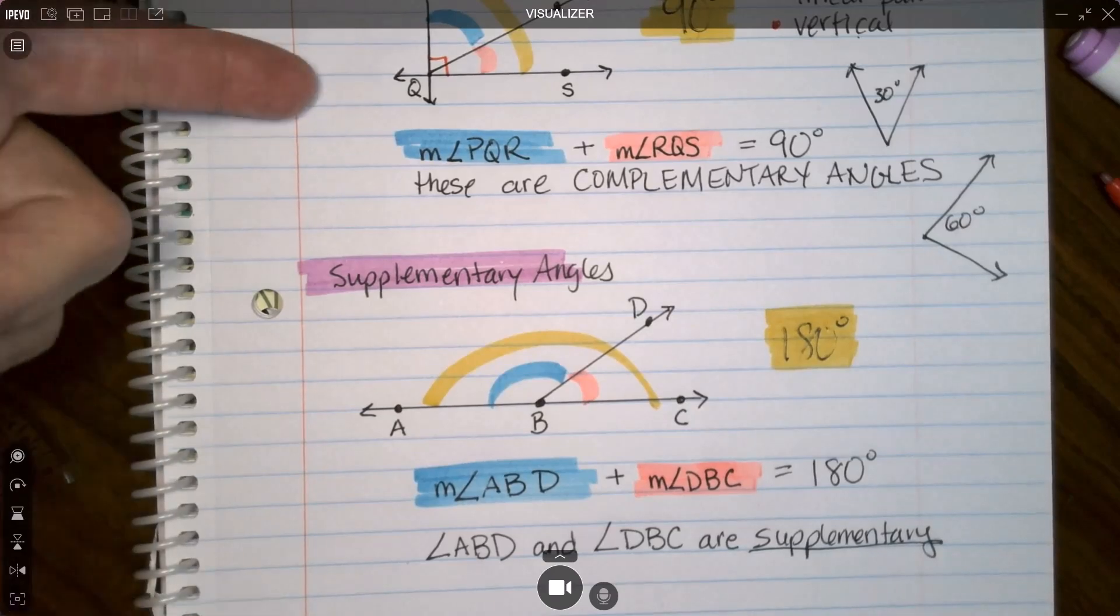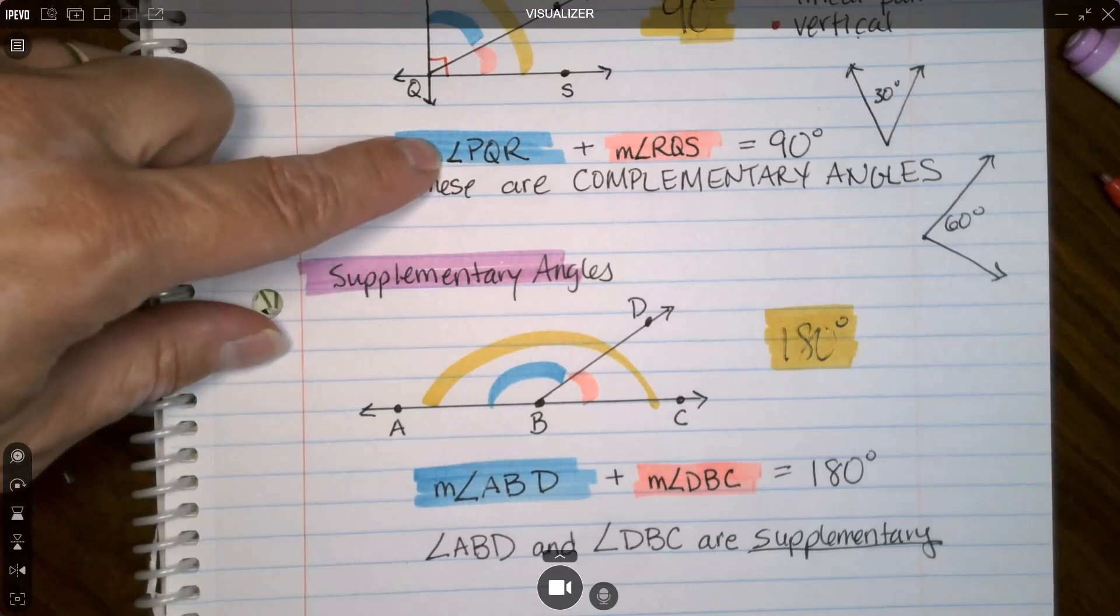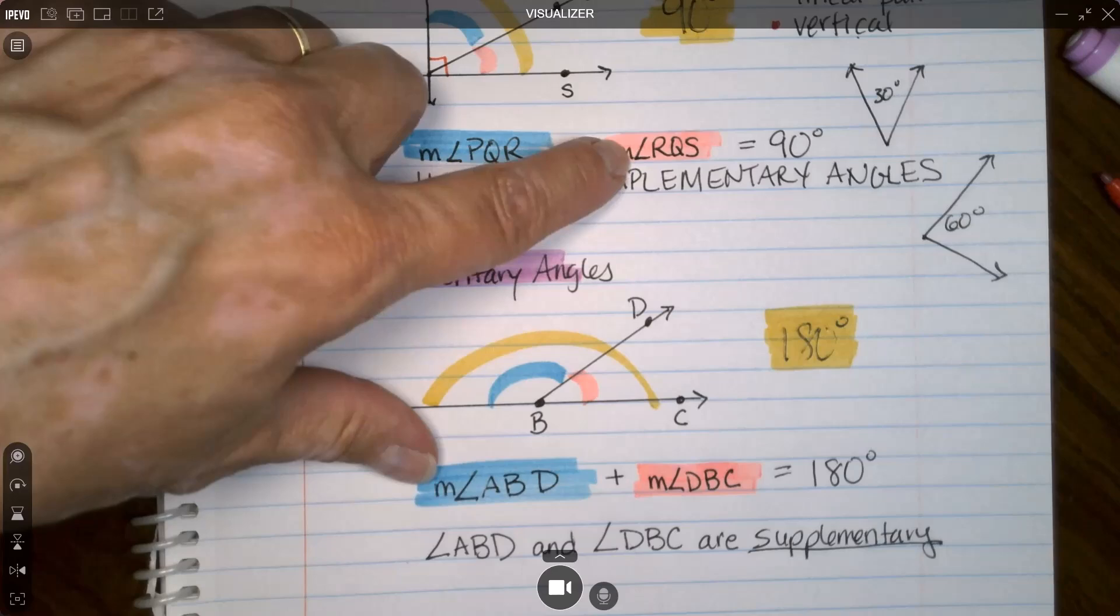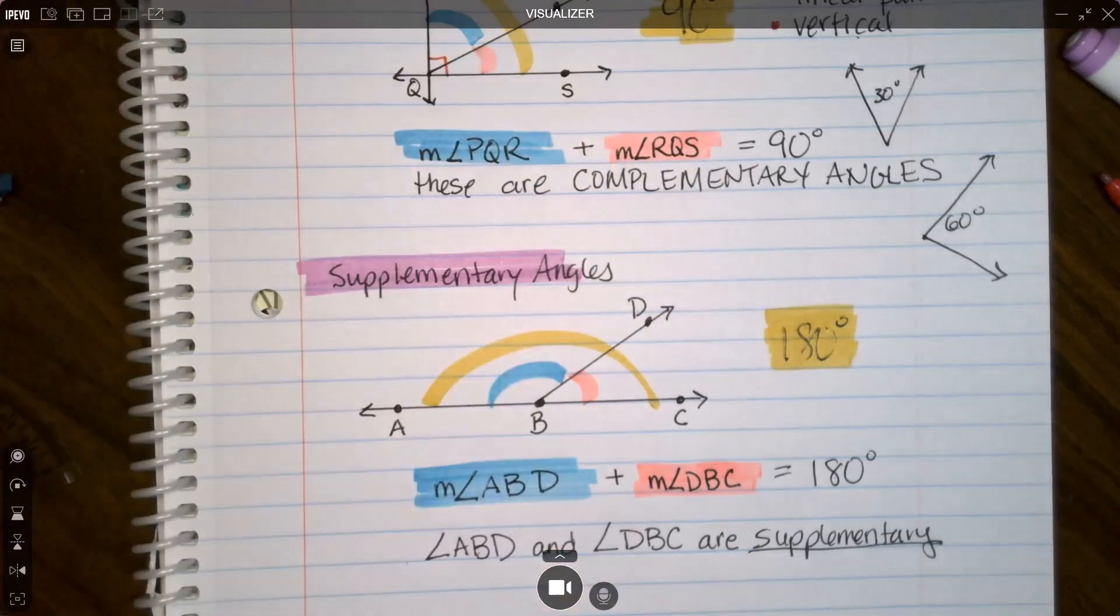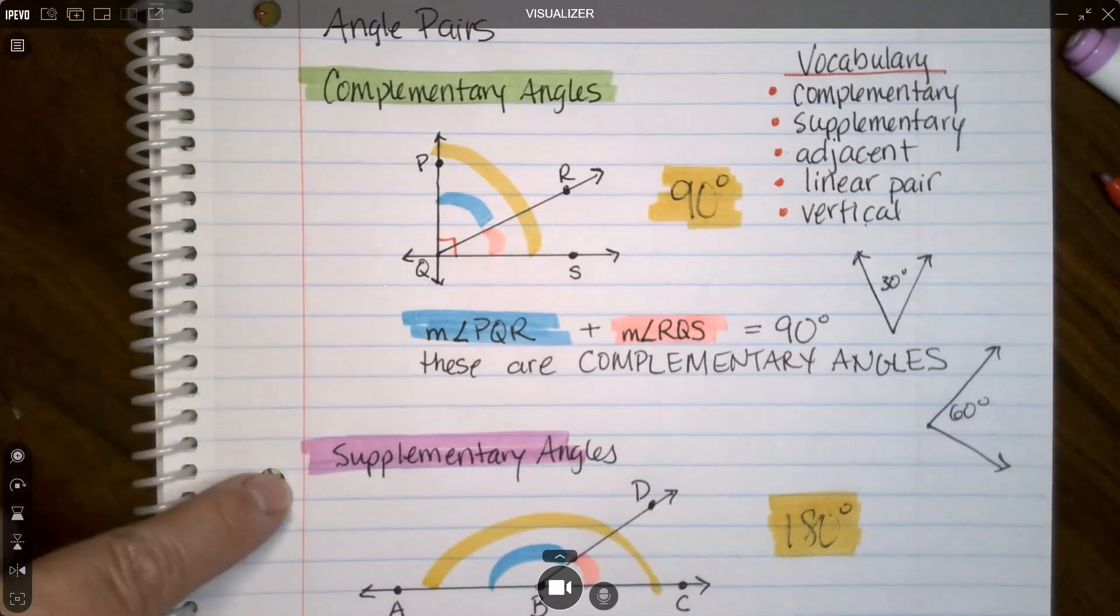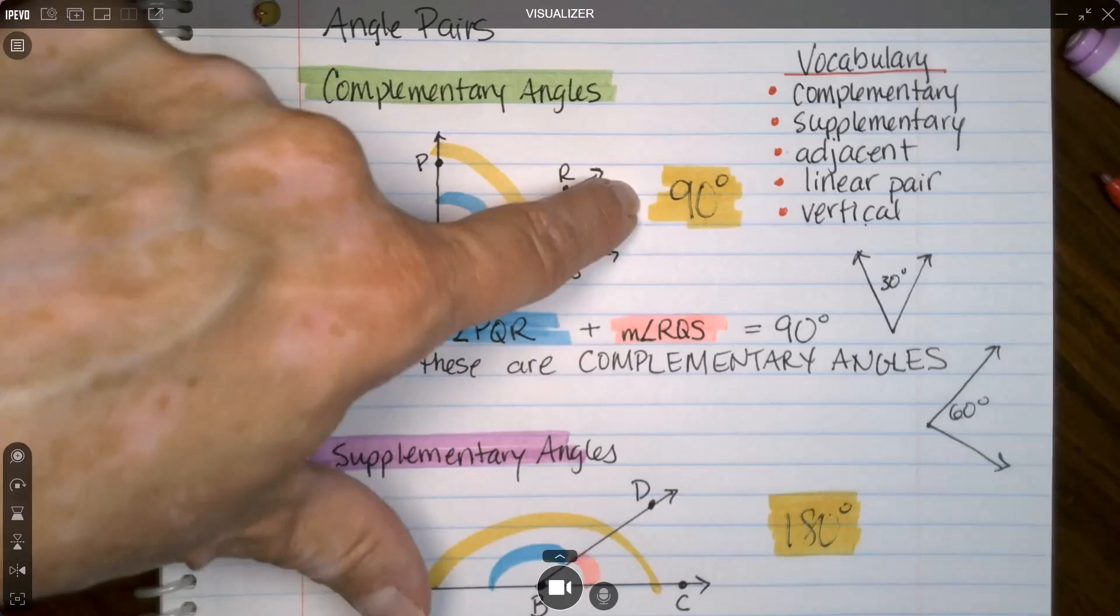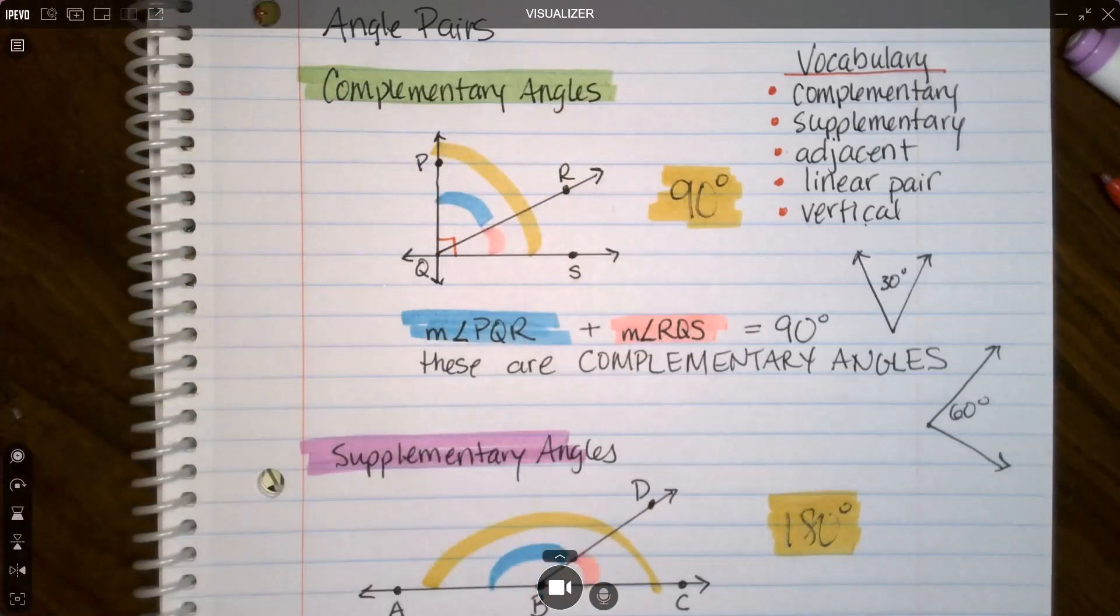This little notation means measurement. If we're going to just talk about the angles by name, we would say angle, without the little m, just the angle sign, ABD and angle DBC are supplementary. I could have said the same thing up here. I could have wrote angle PQR and angle RQS are complementary. That's how you talk about them by name, but if you're talking about how big they are, you put the little m on there.